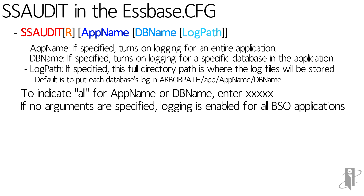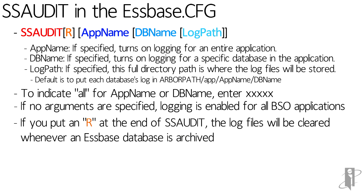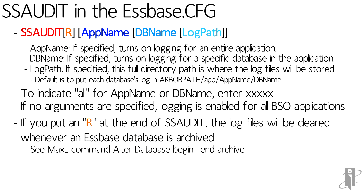The quirkiness is if you put a letter R at the end of SS Audit, it's going to blank out your log files whenever you put the database in and then out of archive mode. Archive mode happens when you use the alter database begin and then end archive commands inside of MaxL.